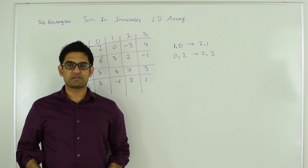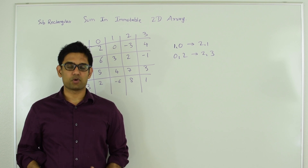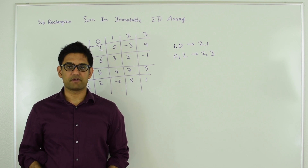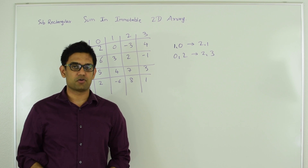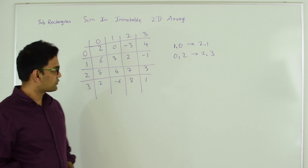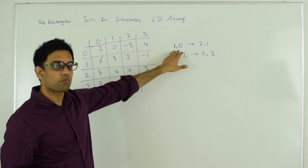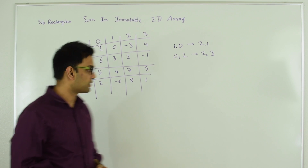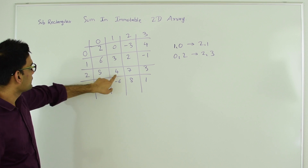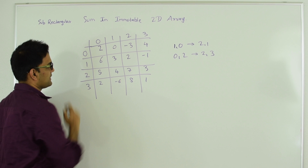Hello friends, my name is Tushar and today I'm going to talk about how to find sub-rectangular sum in an immutable two-dimensional array. By immutable I mean that once the elements in the two-dimensional array are initialized, the values will never change. This is the question from LeetCode. For example, we could be asked: what is the sum in the rectangle starting from 1,0 as the top-left corner and 2,1 as the bottom-right corner? The sum in this rectangle is 18.